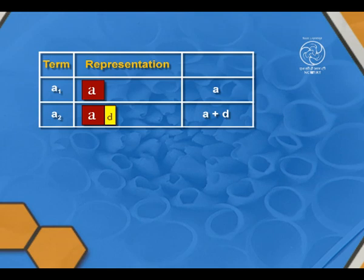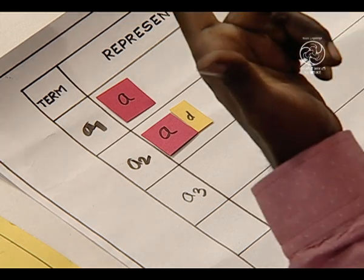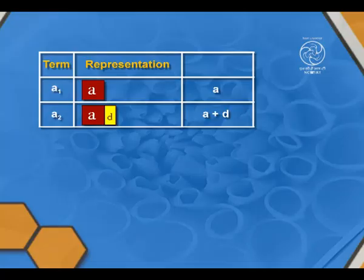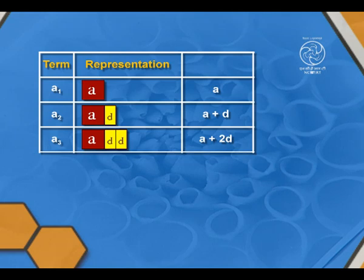The third term will add D to the second term. The second term is A plus D, and to this we add one more D. Then it becomes A plus 2D.